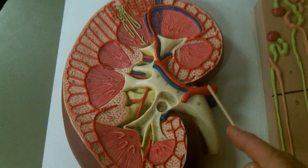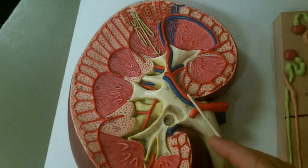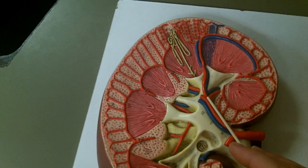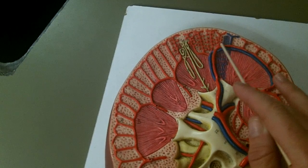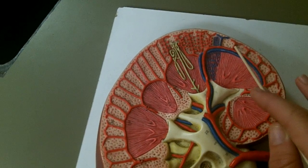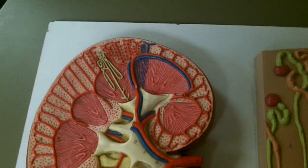This is the renal artery and it's leading to segmented arteries which then leads to lobar arteries which then leads to interlobar arteries which leads to arcuate arteries which leads to these cortical radiant arteries, though some textbooks call them interlobular arteries.